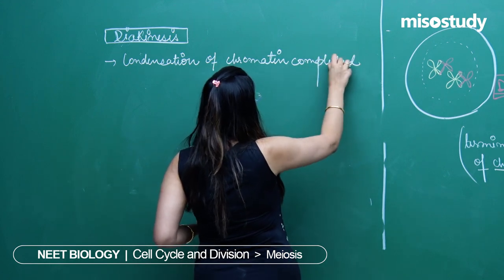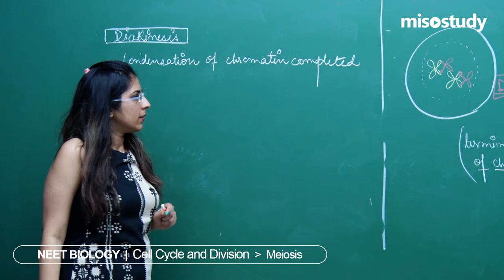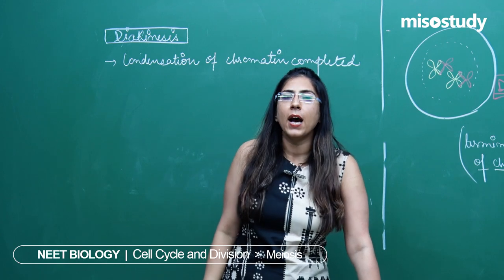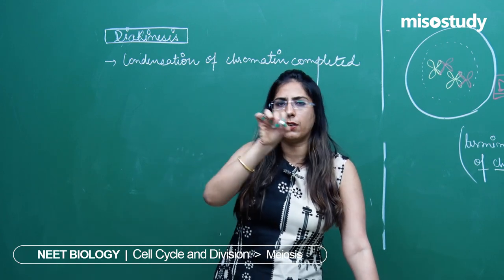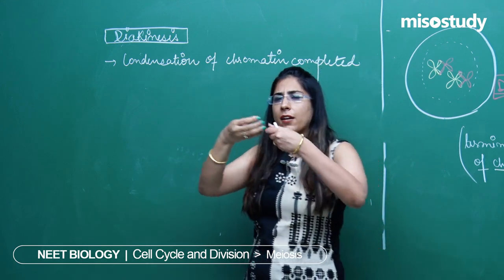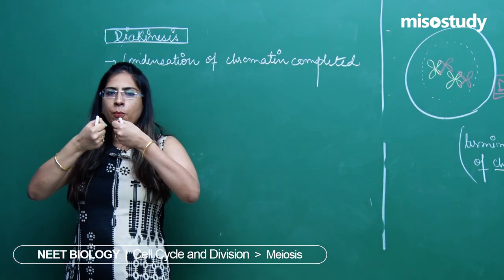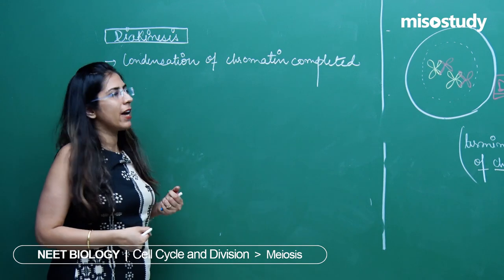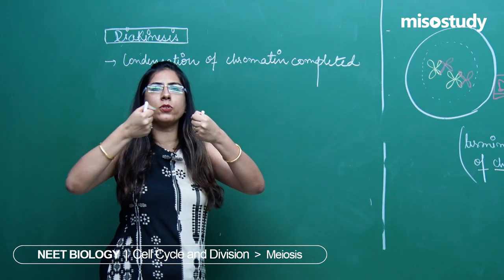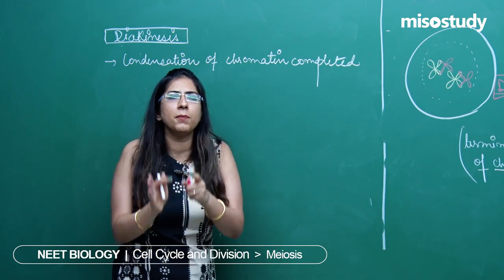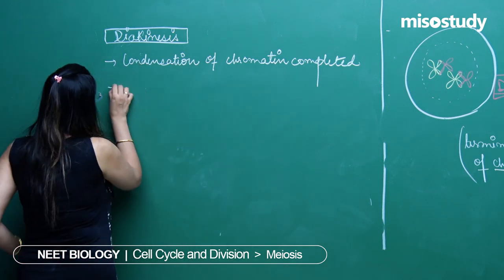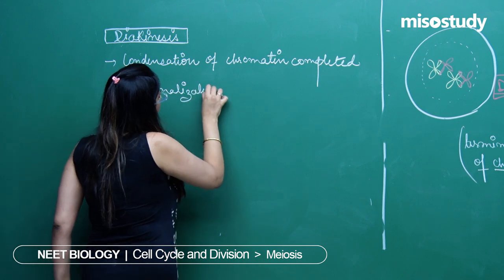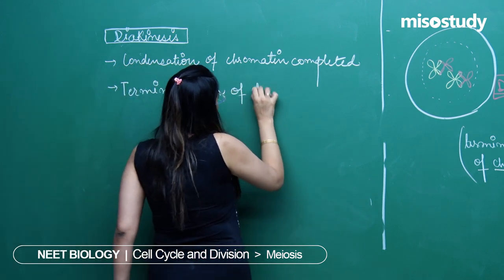In the diplotene stage, the X-shaped structure called chiasma was there and terminalization started because the homologous chromosomes were repulsing each other. By the end of diakinesis, the repulsion has almost completed and terminalization has almost completed.